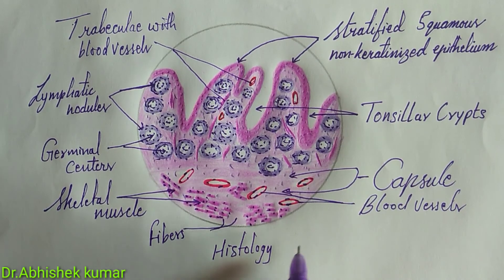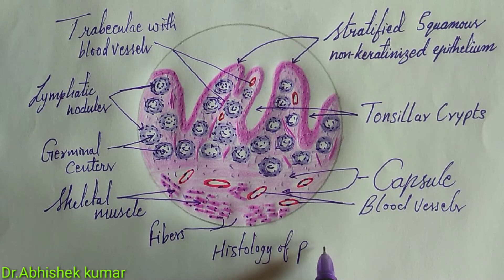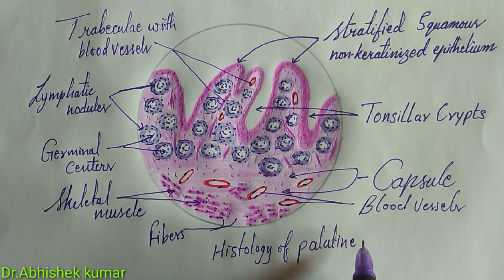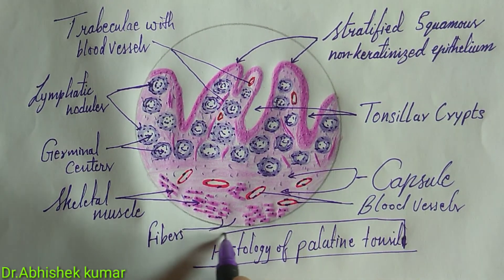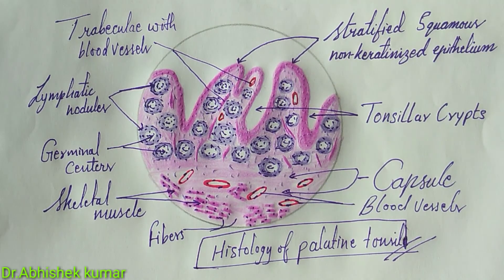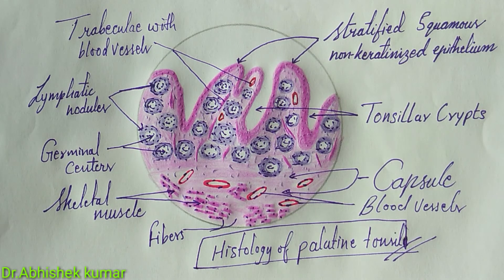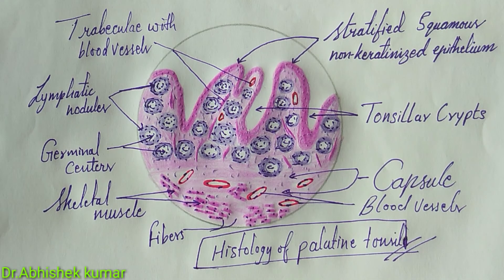Quick recap on how to identify the histology of palatine tonsil: Numerous lymphatic nodules are present along the length of the tonsillar crypts. Within the lymphatic nodules, light staining germinal centers must be present. Underlying the lymphatic nodules, there is a capsule. In the capsule and connective tissue, skeletal muscle fibers must be present. The palatine tonsil is also covered by a protective layer of stratified squamous non-keratinized epithelium. This completes the histology of palatine tonsil.